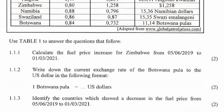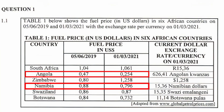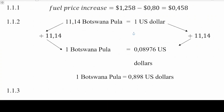Question 1.1.3 asks us to identify the countries that show a decrease in fuel price from the 5th of June 2019 to the 1st of March 2021. From columns 2A and 2B, Angola, Namibia, and Botswana are the only countries that had a decrease in fuel price between the two periods.